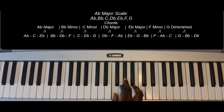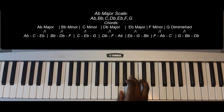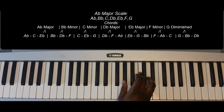F minor: F, A-flat, C. G diminished: G, B-flat, and D-flat. And then A-flat major.